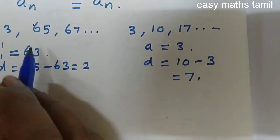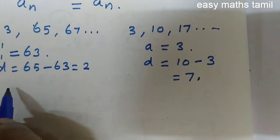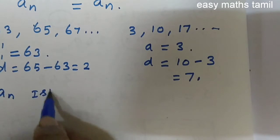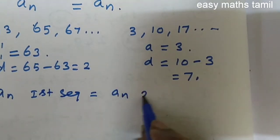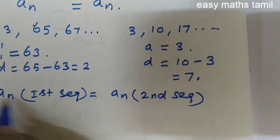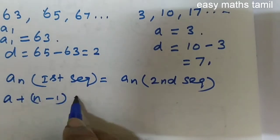Now, equate the an values of these two sequences. An value of the first sequence is equal to an value of the second sequence. The an value is a plus n minus 1 into d.